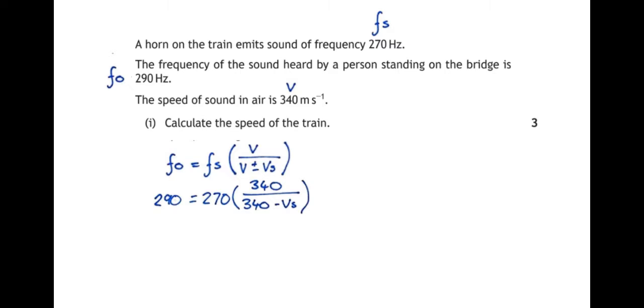Now, I'm trying to work out VS here. This is going to be a horrendous piece of algebra. I feel sorry for the students that had to work this out in 2017 because it takes quite a few steps to work this through. Here's what I would do. First, I'm going to take the 270 to the other side. I'm going to divide both sides by 270 and I get 290 over 270 equals 340 divided by 340 minus VS.